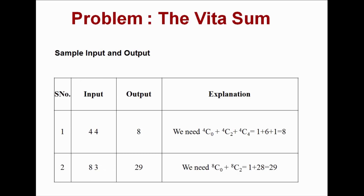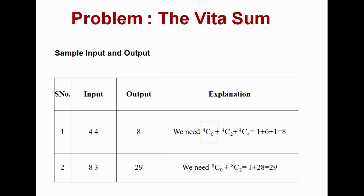Now you can see the sample input and output. For example, user inputs 4 and 4: N=4 and K=4, meaning 4 balls and maximum 4 ball pick-up. We find the even-number combination sum. If we pick 2 balls and 4 balls from 4, the result is the total combinations.